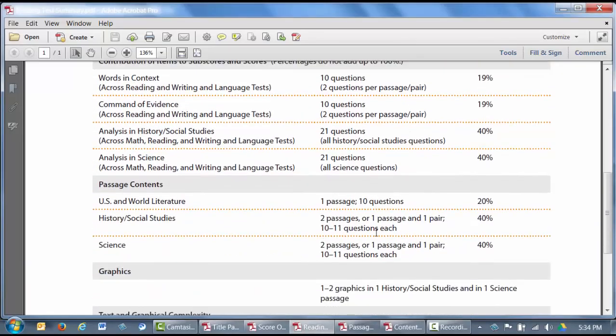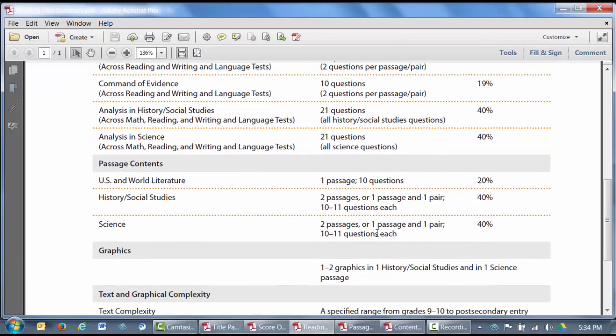Let's take a minute to talk about the different types of passages. In the reading test, you're going to see both literary and informational passages. Literary passages will be drawn from works of fiction, usually an excerpt from a short story or novel from the US or other parts of the world. The informational passages will be drawn from published nonfiction works in the area of history, social studies, and science.